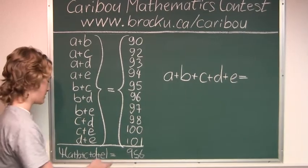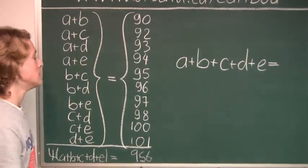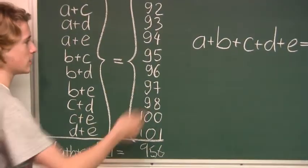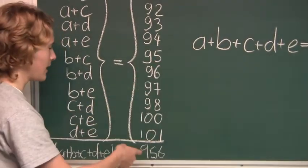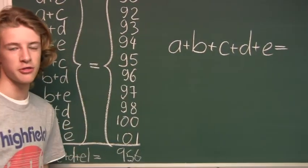So now you would divide both sides of the equation by 4. So then, on the left side you have A plus B plus C plus D plus E, and on the right side you would have 239.